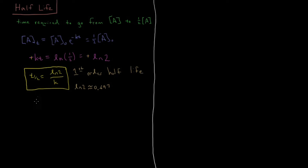For a second-order reaction, the second-order integrated rate law is most conveniently expressed as: 1 over the concentration of A as a function of time equals 1 over the initial concentration plus the rate constant times time. We do the same thing as before — we set A(T) equal to one-half A₀, but since A₀ is in the denominator, 1 over one-half A₀ becomes 2 over A₀.